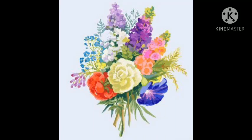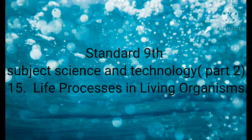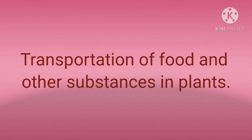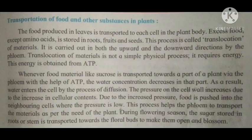In this video on life processes in living organisms, we previously studied transportation — how water is transported in plants using root pressure and transpiration pull. Now we will study the transportation of food and other substances in plants. Food produced in leaves is transported to each cell in the plant body. Excess food, except amino acids, is stored in roots, fruits, and seeds. This process is called translocation.